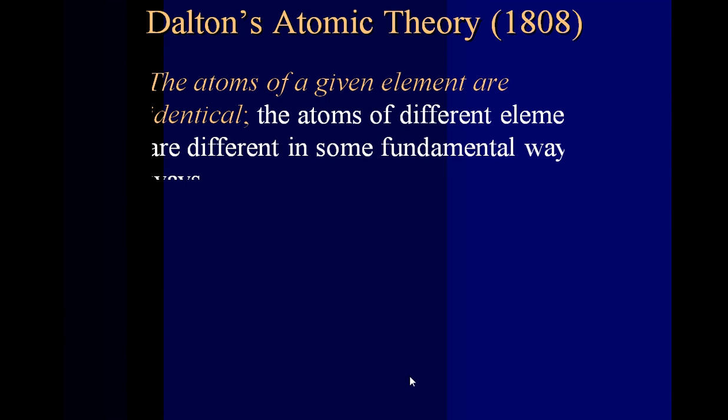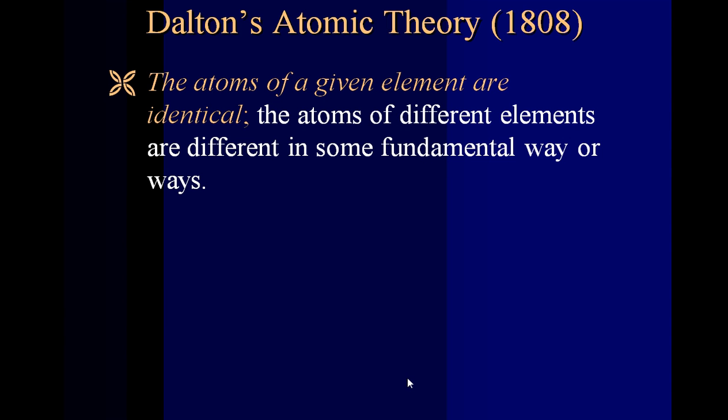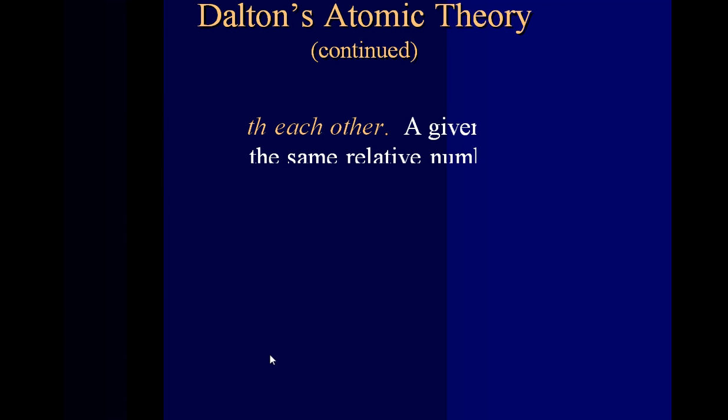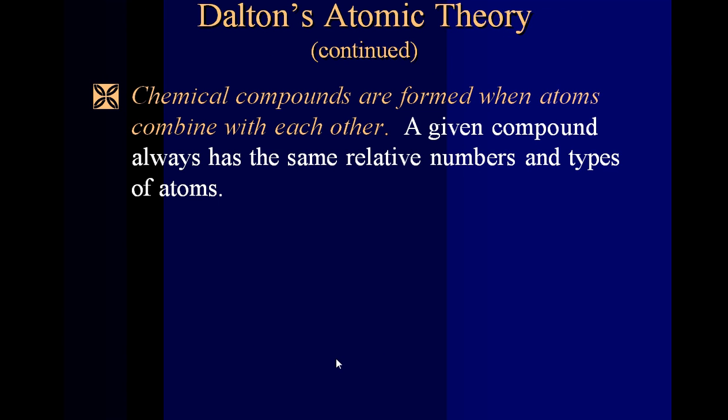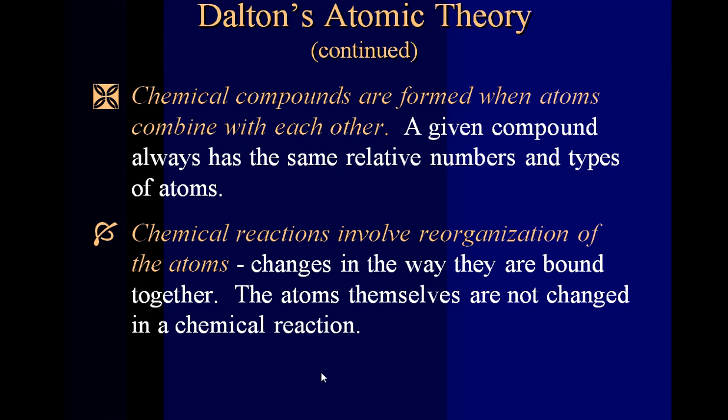Dalton's atomic theory: atoms of a given element are identical. No matter where you're at, if I'm looking at a carbon atom here in Avon, it's going to be the same on the surface of Jupiter. They're identical and they are different in some fundamental ways. Chemical compounds are formed when atoms combine with each other, and the given compound always has the same relative numbers and types of atoms.